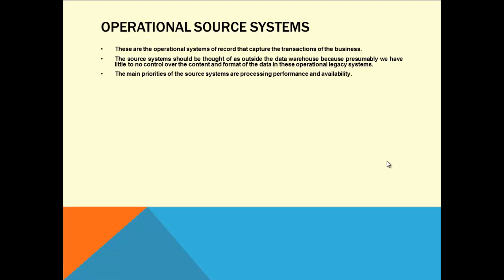You have very minimum command on the source systems. The main priorities of the source system are processing, performance, and availability. Performance is very important. If you go to a bank ATM and the machine does not respond after you insert a card for two minutes, you worry your card is gone or someone can misuse it. We all feel bad when our Gmail doesn't refresh properly. Performance is a very important thing on the operational source system.